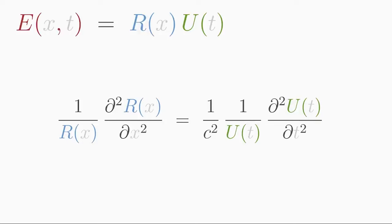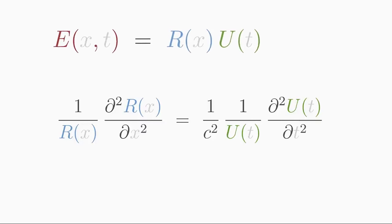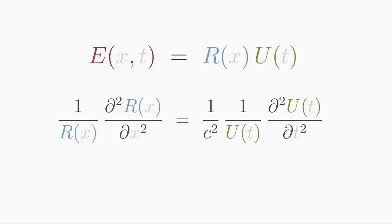If you manage to separate a partial differential equation this way, then the separation ansatz was successful. Now, we can vary x on the left side without changing the right side because there is no x on the right side. The same is true for the time t. If we vary the time on the right side, the left side remains unchanged because there is no time t. Thus, both sides must be constant.